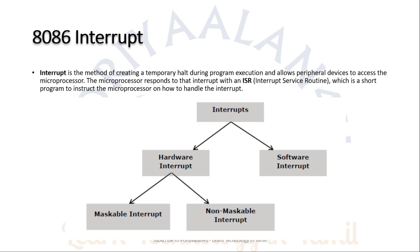Interrupts are signals that occur while the processor is executing instructions. When an interrupt occurs, the current execution stops and the interrupt is given priority to execute via the Interrupt Service Routine. Interrupts are divided into two categories: Hardware and Software. Hardware interrupts include maskable interrupts, which can be reordered and executed based on priority.